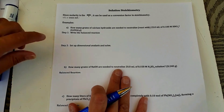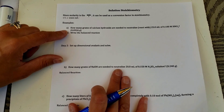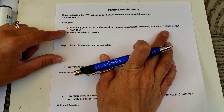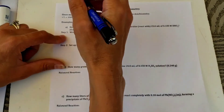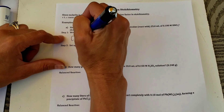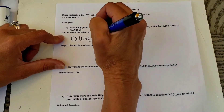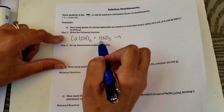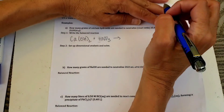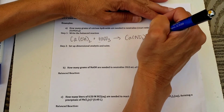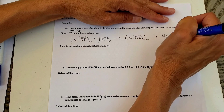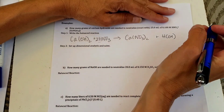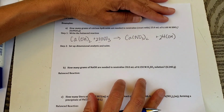We're going to calculate how many grams of calcium hydroxide are needed to neutralize 25 milliliters of a 0.1 molar solution of nitric acid. The first thing we need to do is write the balanced equation. We write out calcium hydroxide and nitric acid. It's a double replacement reaction, so calcium and hydrogen switch places, giving us calcium nitrate in solution and water — written as HOH to help balance. There are two nitrates, so we put a two in front of HNO₃ and a two in front of HOH, and that balances the equation.